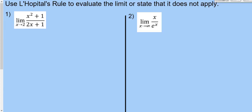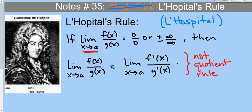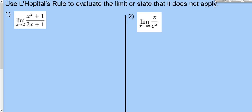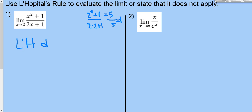Problem 1: use L'Hôpital's rule or state that it does not apply. We substitute 2: 2²+1 = 5 in the numerator, and 2(2)+1 = 5 in the denominator. That's 5/5 = 1, which is not 0/0 or ∞/∞. So L'Hôpital's rule does not apply — we just use direct substitution and get 1.